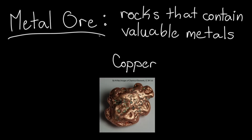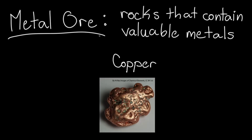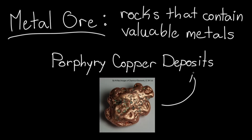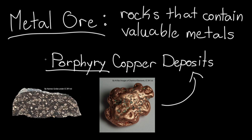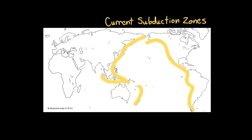For example, most copper ore is found in what are called porphyry copper deposits. Porphyry just means that the rock that makes up these deposits contains a mix of large and small crystals, like in this image here. Porphyry copper deposits form in subduction zones along convergent tectonic plate boundaries. Today, most subduction zones are found along Pacific coastlines, so you can expect to find a lot of porphyry copper mines in these places.